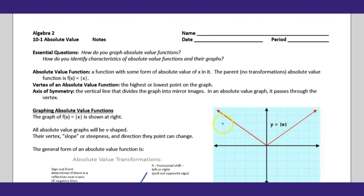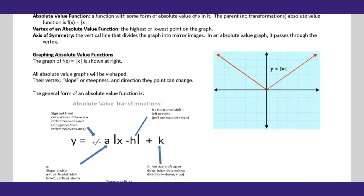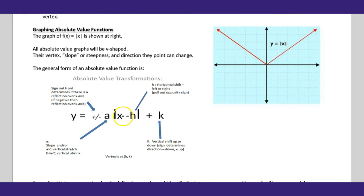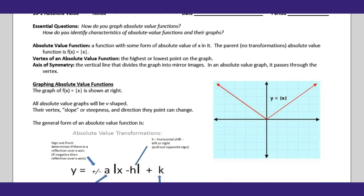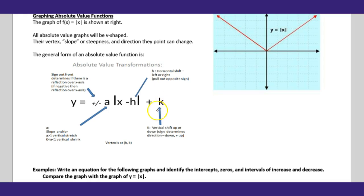The graph of f(x) = |x| is shown — all absolute value graphs will be V-shaped. Their vertex, slope or steepness, and direction can change. The general form of the absolute value function is shown here. This is all the same stuff we just did; the only difference is we had a radical, now we do not — it's just absolute value. So the transformations will be the same as the last unit: k is vertical up or down, h is left or right — remember use the opposite sign. The a value is the steepness, the vertical stretch or compression, and the plus or minus tells you if it opens up or down.